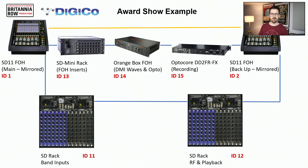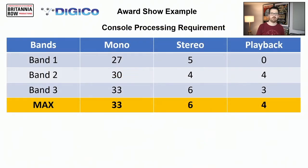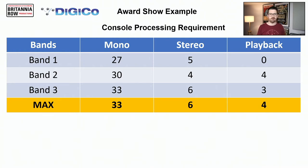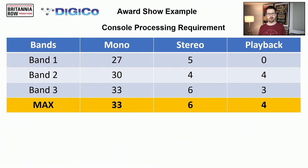The next step is to work out my requirements. In today's scenario I've got three bands, and the way I structure my session for these types of events is to work out the maximum amount of mono and stereo channels I need for each band, take the highest value of each, and use that as a pool of resources I can call upon on a snapshot-by-snapshot basis. I've also allowed some playback channels, as these events often have house playback systems.